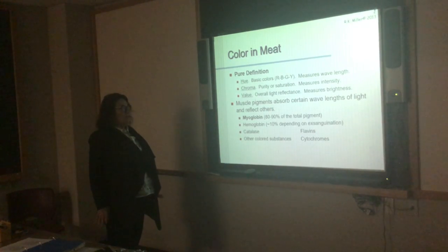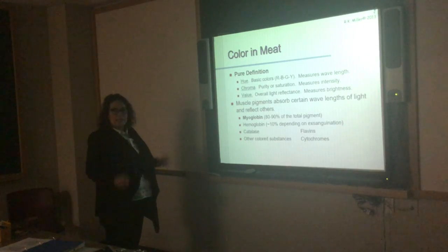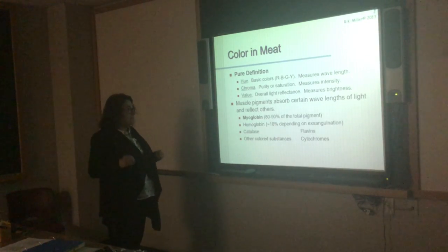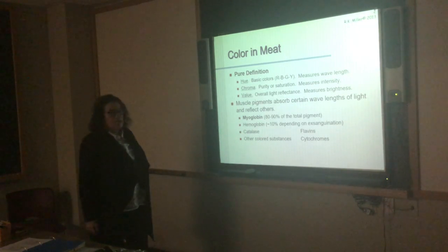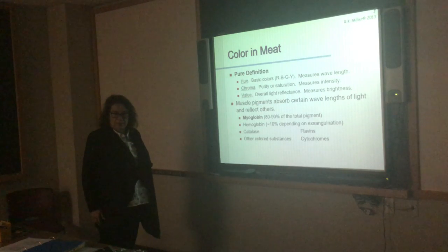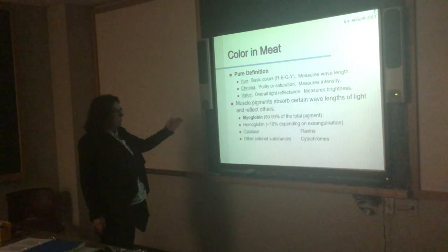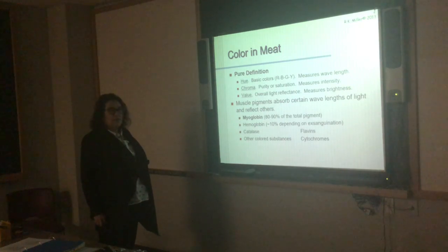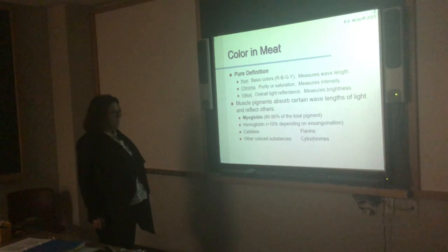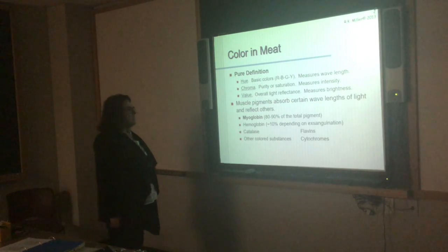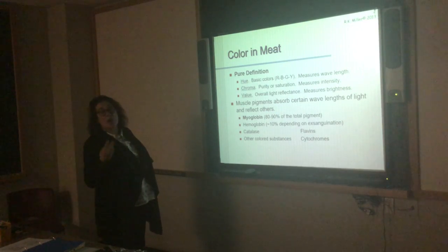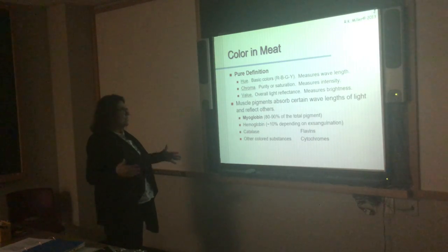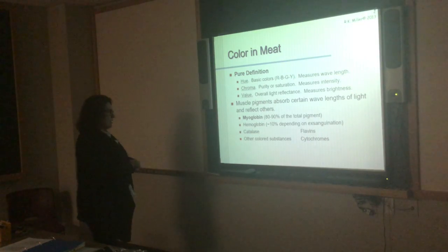The major protein in meat that gives it its color — about 80 to 90% of the total pigment — is myoglobin. Myoglobin can exist in three states, though it can exist in additional states that are very specific to issues with contamination. Hemoglobin is also going to be present in meat. Hemoglobin and myoglobin were some of the first proteins really characterized in biochemistry.